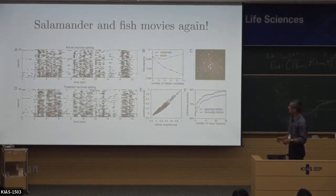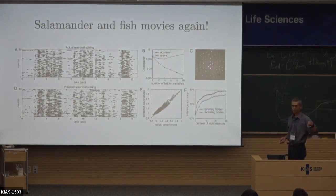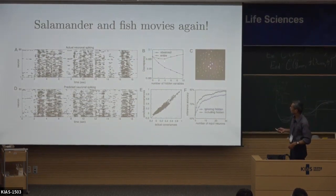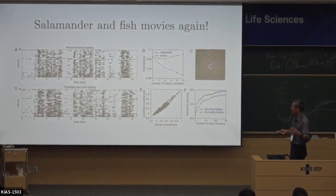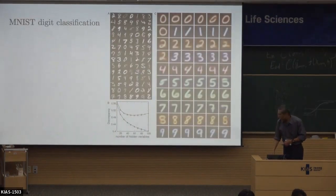Back to the salamander retina: we artificially hid four strongly-connected neurons from our inference and asked whether the algorithm could predict their number and improve predictions by including them as hidden variables. The algorithm correctly estimated that roughly four strongly-connected hidden variables were needed, and including them gave slightly better predictions.